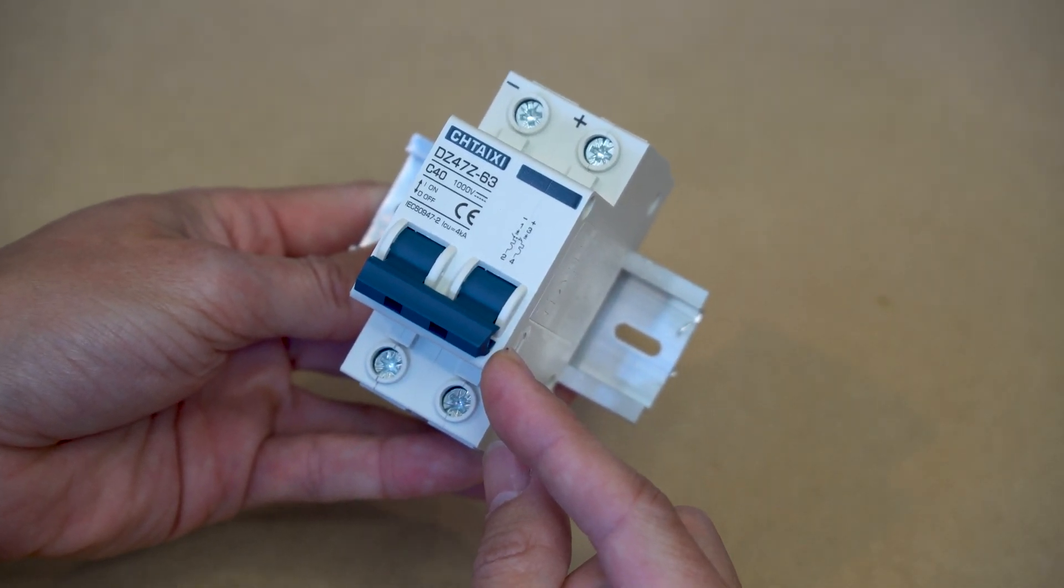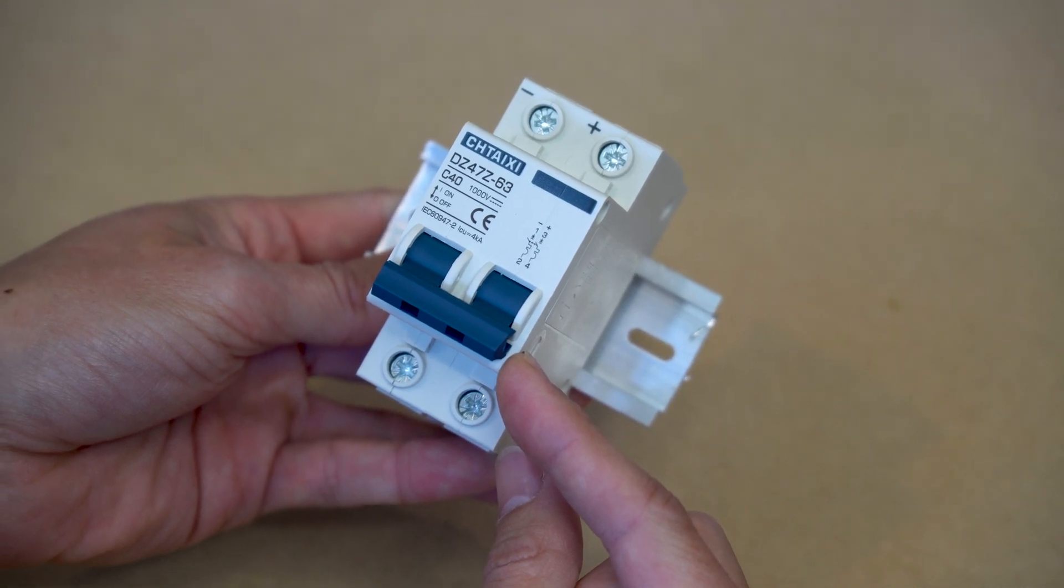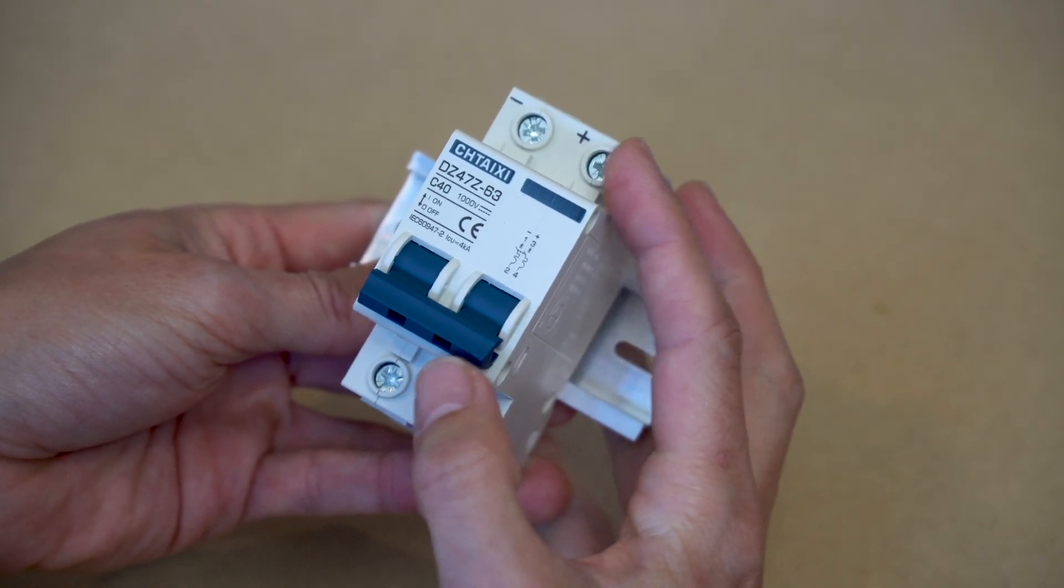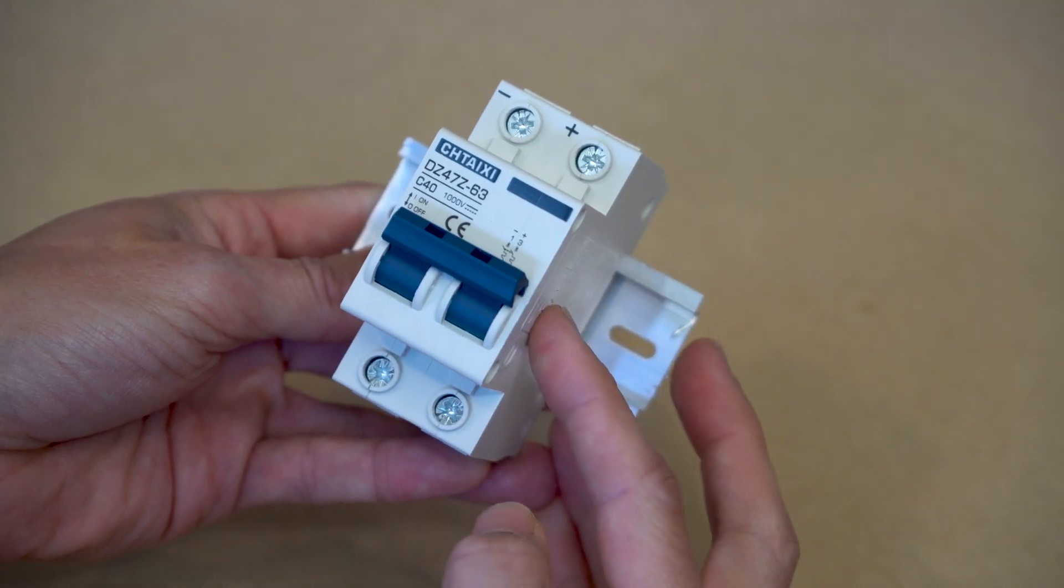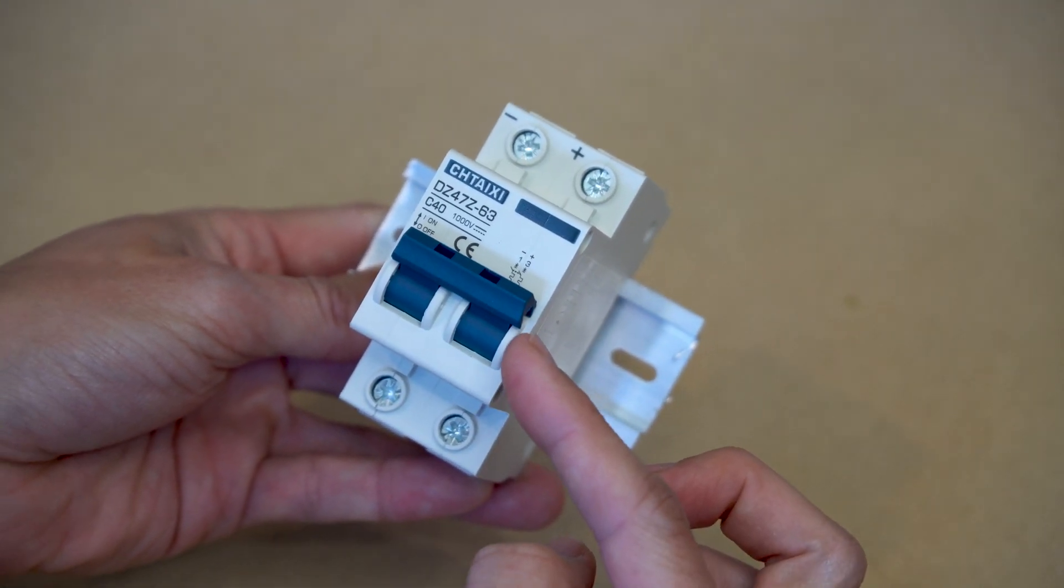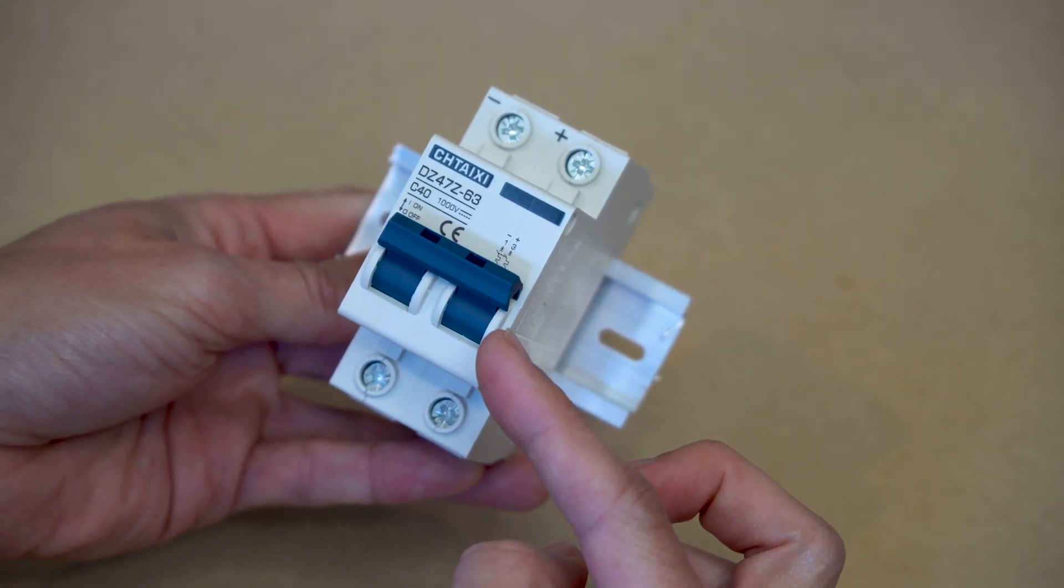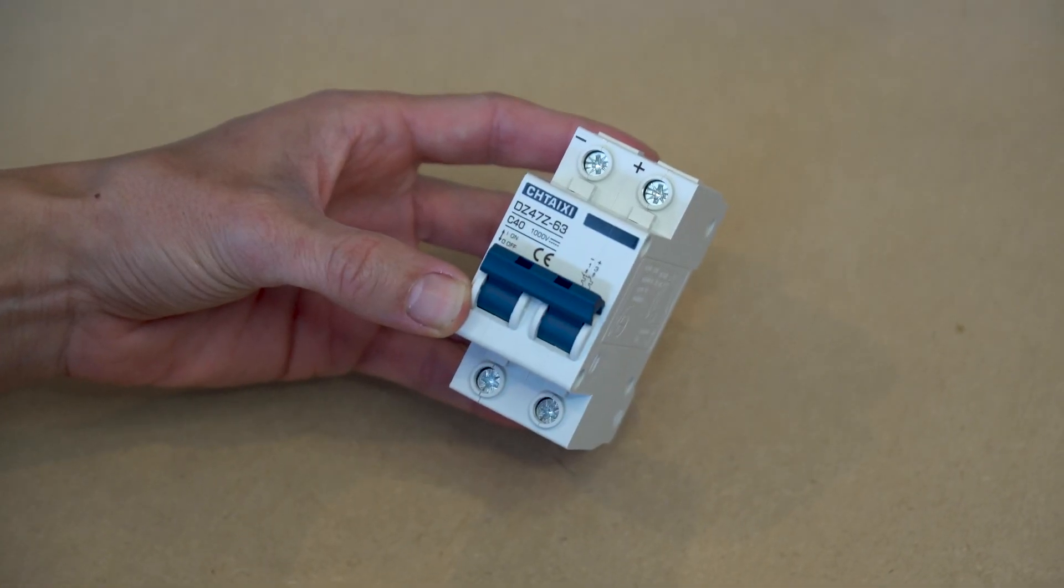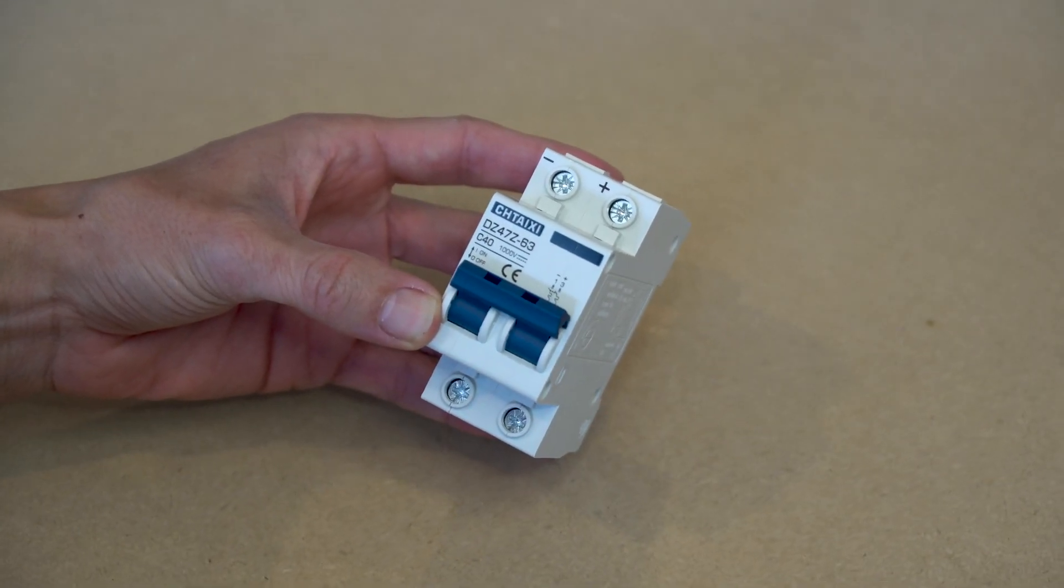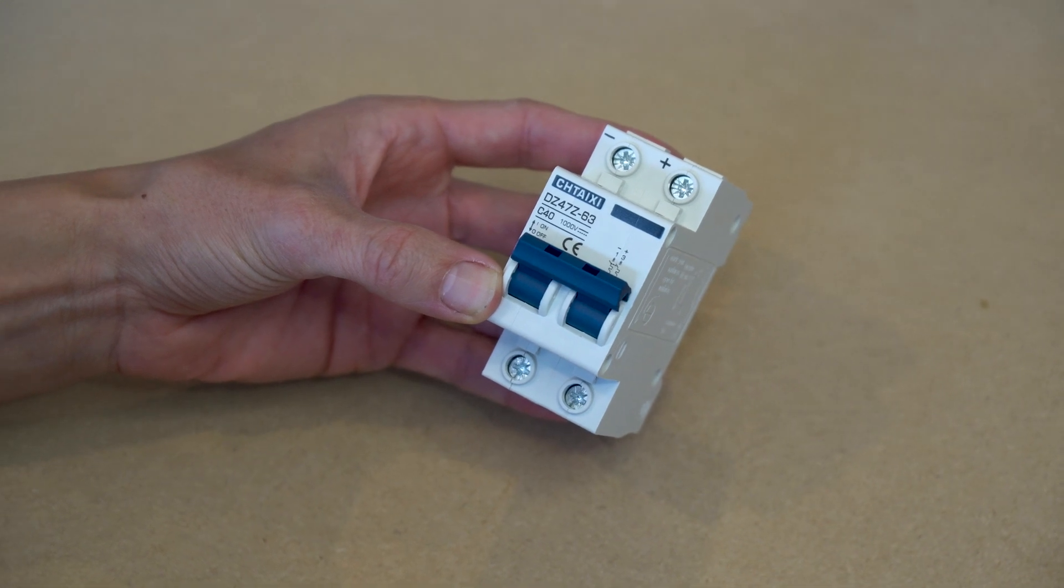You can also do this intentionally when you want to work on your system. To re-establish the circuit you simply push the switch back into the on position. Now let's connect some wires to this breaker. For wires coming from the power source like your solar panels you'll need to connect the positive and negative wires.